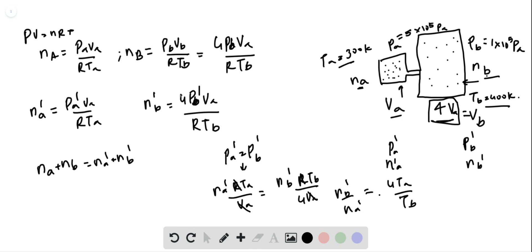Now solving this equation, NA plus NB is simply PA VA by R TA plus 4 PB VA by R TB. Notice that we can write NB dash as NA dash times 4 TA by TB.